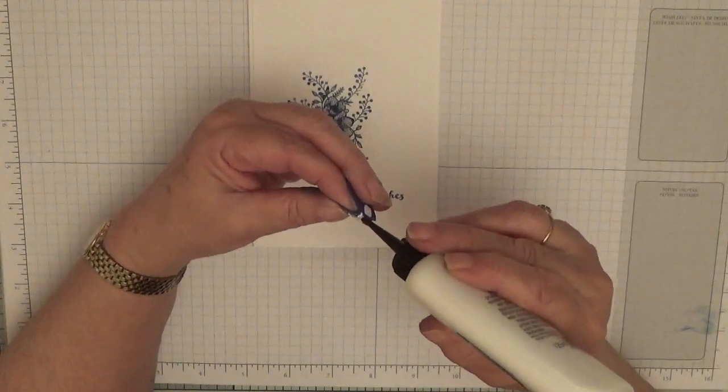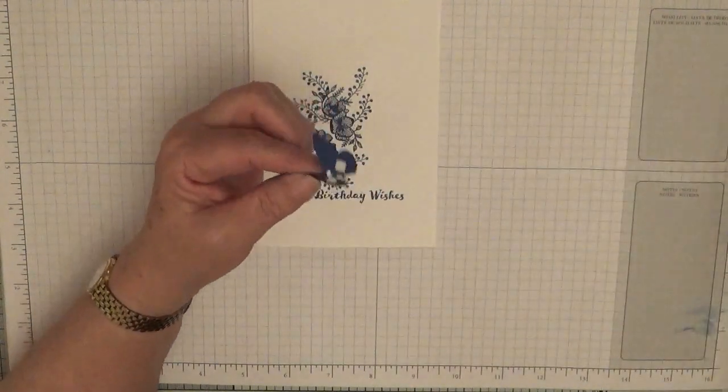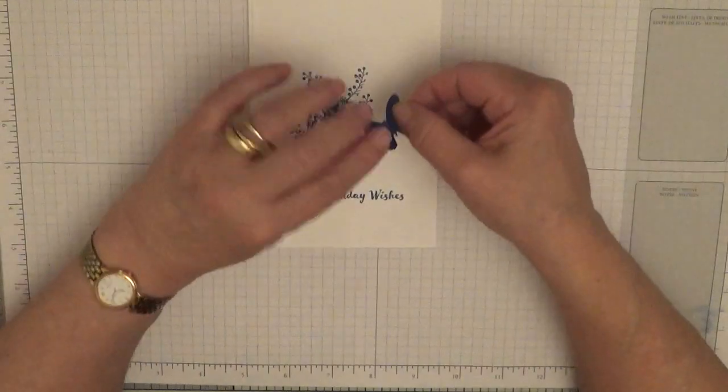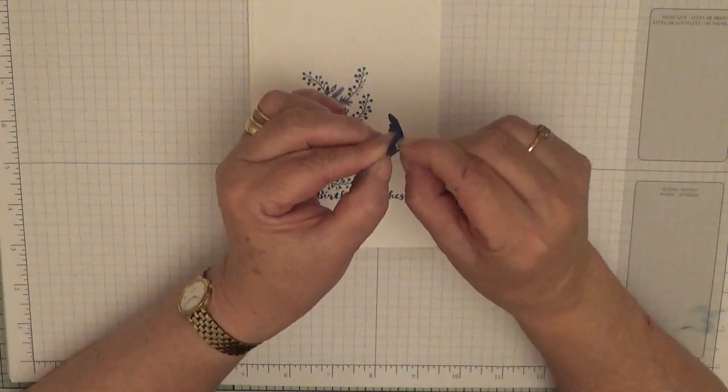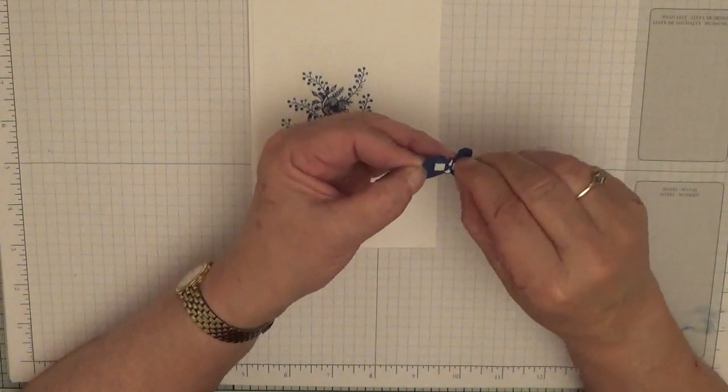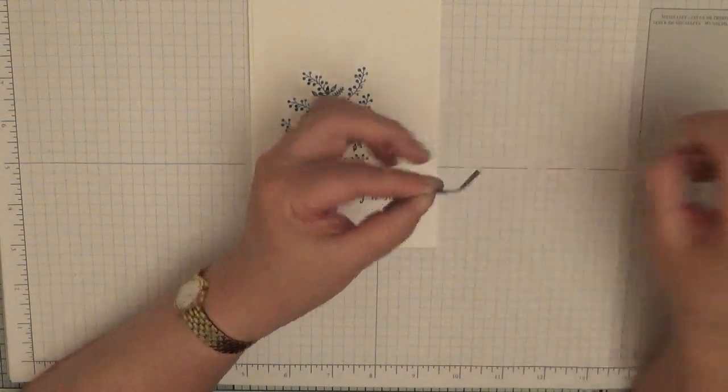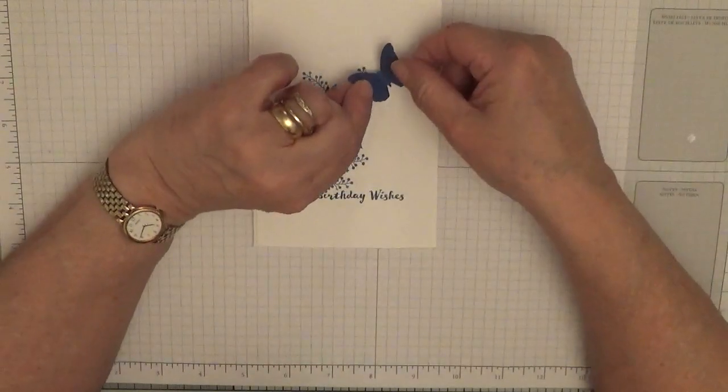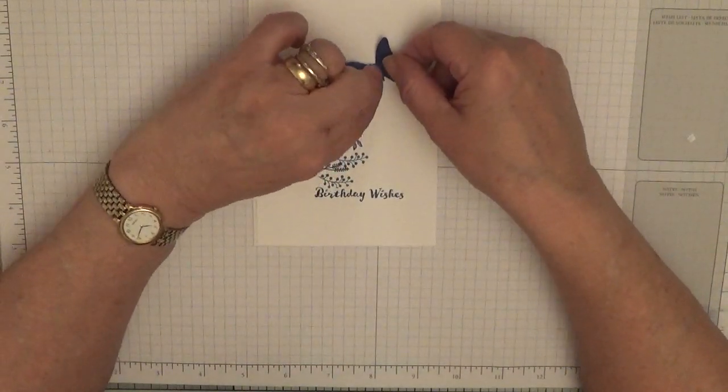So a bit of glue on. Oh yeah, take the backings off, that would help wouldn't it. And place that just there and place that just there.